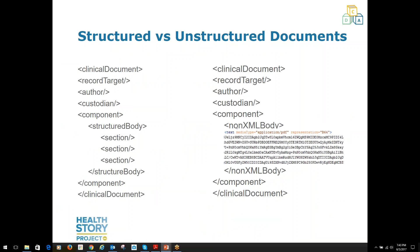The body of the CDA document contains structured XML data, or encoded data in a non-XML body, which can be rendered digitally but does not support computer processing in the same way that structured XML data does. When the document has a coded body, a computer can process each individual section of information in the document. Further, the sections of the document may include individual structured entries that make it possible for a computer to process the information in each section. But don't forget — first and foremost, the information contained in each section of the document is human-readable.